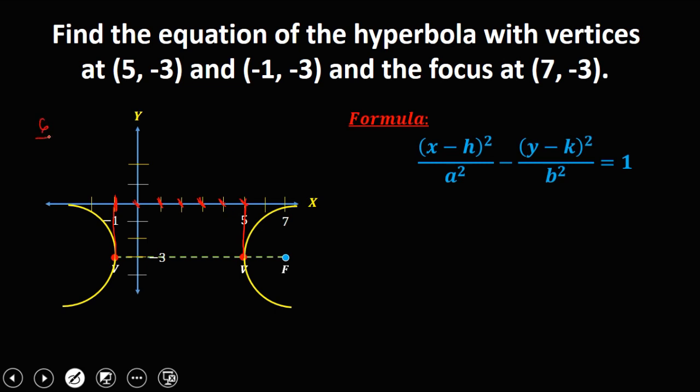So 6, then divide this by 2 to get the center, that's 3. So count 3: 1, 2, and 3. So therefore, this is now the center of our hyperbola, and the coordinates of the center are (2, -3).